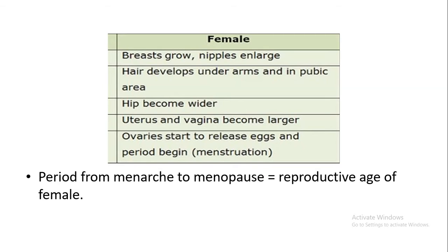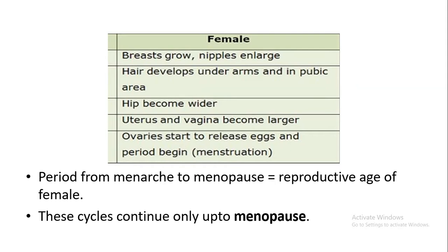The day the menstrual cycle starts is called menarche, and when the menstrual cycle stops, that is called menopause. The period between menarche and menopause is called the reproductive period of the female. When the reproductive phase is finished and menopause comes, there are no more cyclic changes in the female — menopause is the stopping of the menstrual cycle.